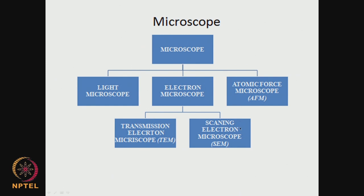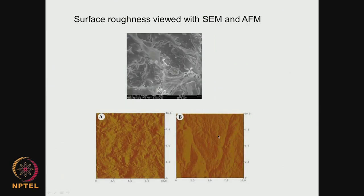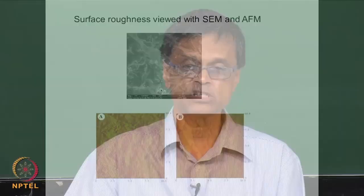The scanning electron microscope has resolution of about 20–100 nanometers. For example, this picture shows the surface roughness of a polymeric material that gets rough when incubated for a long time in body fluids. This is a scanning electron picture of that roughness, and the same is shown with AFM for better resolution. It is very important to know whether the surface gains roughness, and to what scale, when the surface is affected.